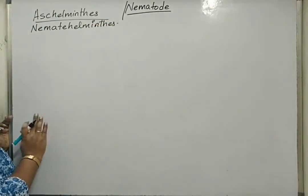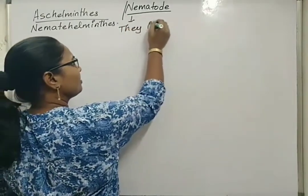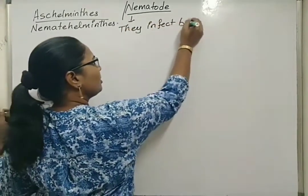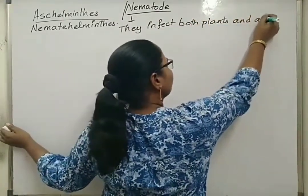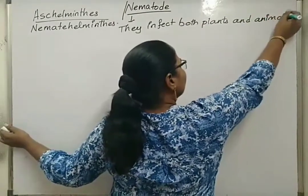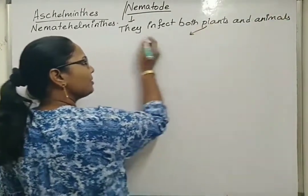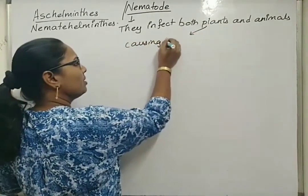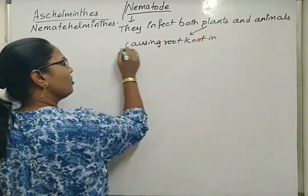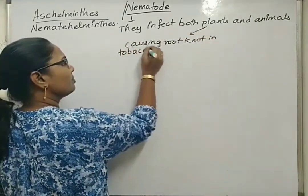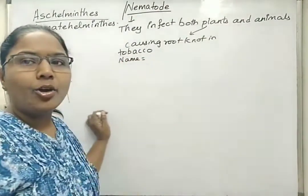Nematodes infect both plants and animals. The type of nematode that infects plants causes root knot in tobacco. The name of this nematode is Meloidogyne incognita.